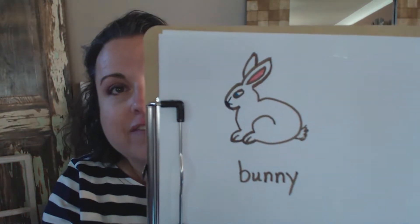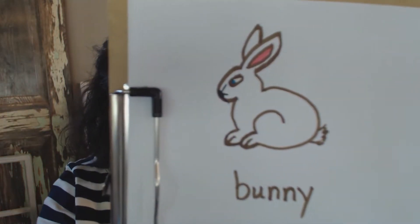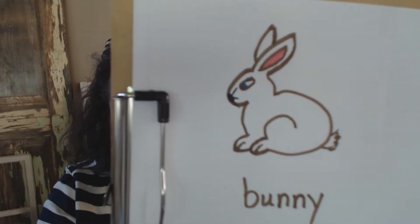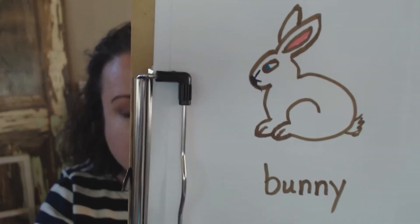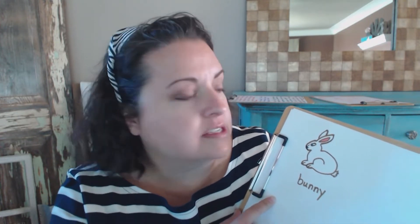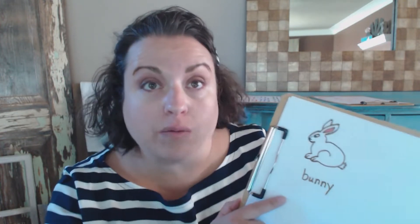I want to talk to you today about the difference between a mathematician's sketch and an artist's drawing. This is an illustration of a bunny that I drew. You can see that it has lots of details — I used more than one color and I even put a label. That's an example of an artist's drawing. An artist's drawing has lots of detail, uses multiple colors, and is the type of drawing you might want to do if you are illustrating your writing.